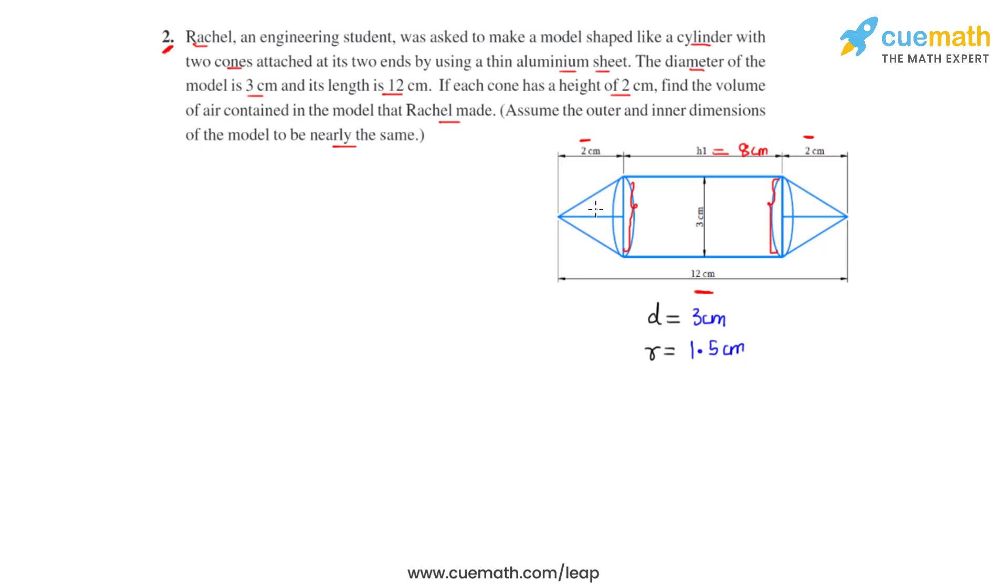Now to find the volume of the model, we know that the volume will be equal to the sum of the volumes of the two cones. So we write it as 2 times the volume of cone plus the volume of the cylinder.